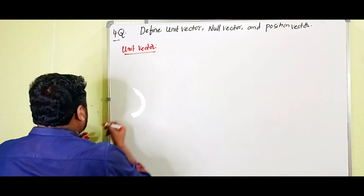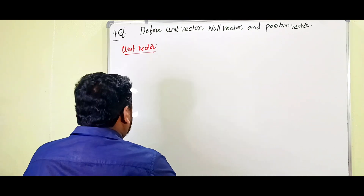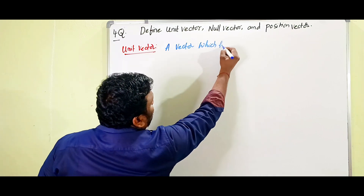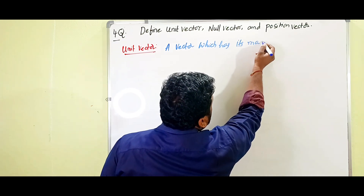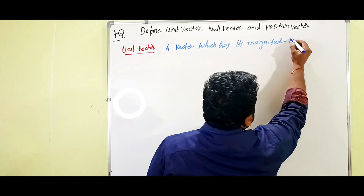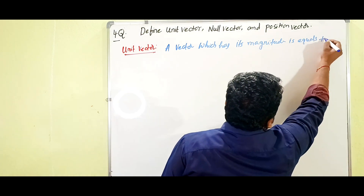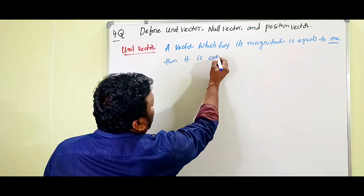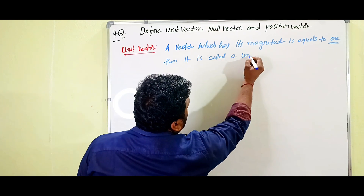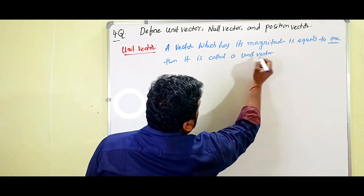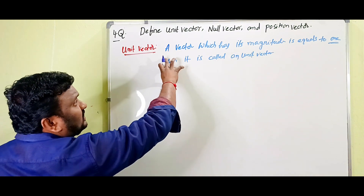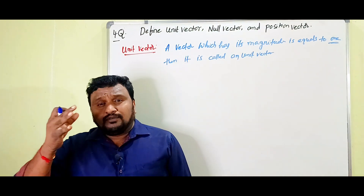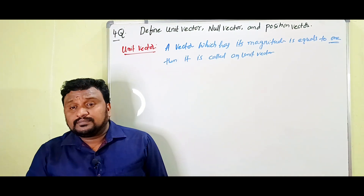A vector which has its magnitude equal to one is called a unit vector. So children, a vector whose magnitude equals one is called a unit vector.